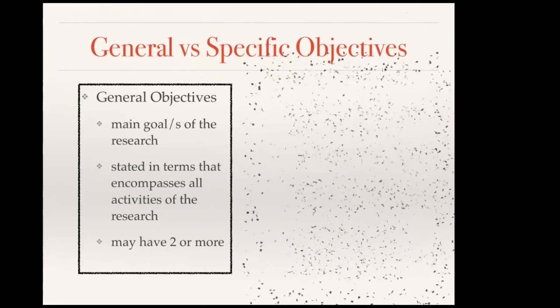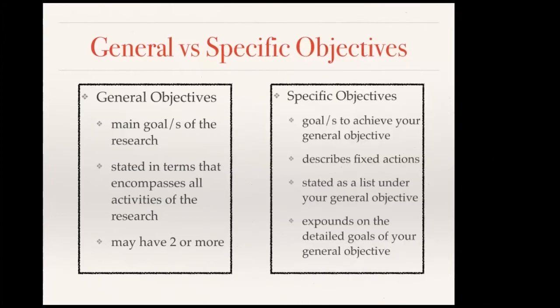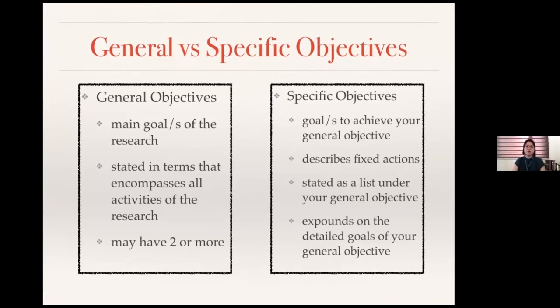Specific objectives, on the other hand, are goals to achieve your general objective. They actually describe fixed actions and are basically stated as a list under your general objective. So if you have two or more general objectives, for general objective number one you can have several specific objectives, and for general objective number two, you can have another list of specific objectives.